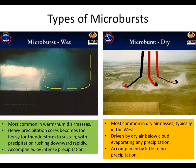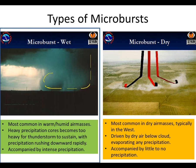Meteorologists have defined two types of microbursts: wet and dry. Wet microbursts, more common east of the Rockies, form in warm, humid climates, while dry microbursts are more common in the western U.S., where air masses are typically much drier. Though microbursts in the north country are fairly infrequent, when they do occur, they are of the wet microburst variety.